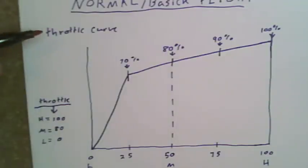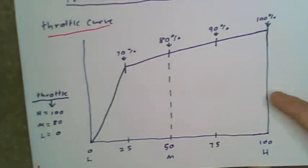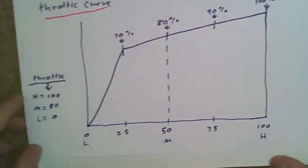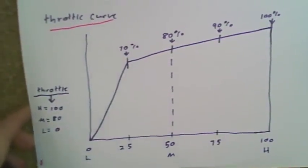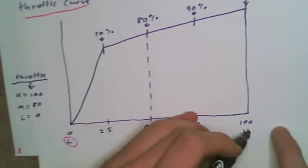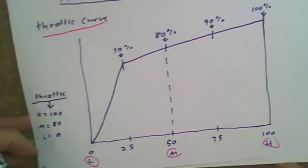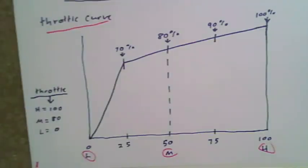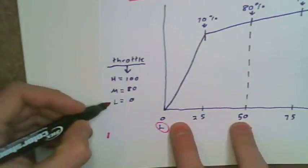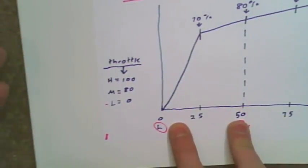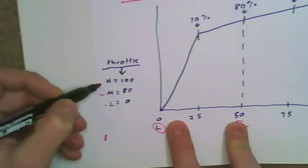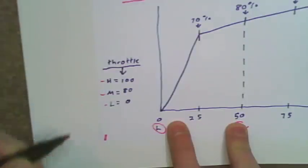Now let's get into the normal throttle curve. The throttle curve is going to be a little bit different. It's the same concept — we've got low, medium, and high settings — corresponding to low stick, mid stick, and high stick. At low stick you want to have zero; in normal mode the motor won't spool up with the stick all the way down. At mid stick I like to hit about 80 percent, and at high stick of course 100 percent.